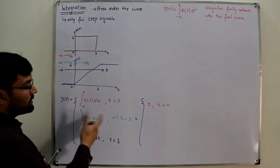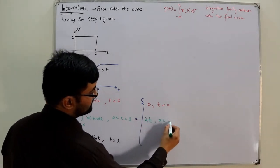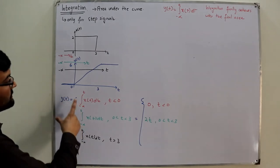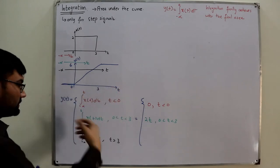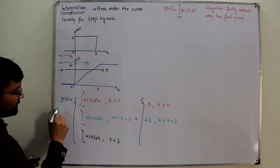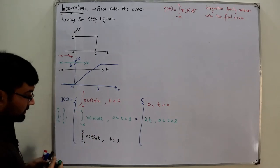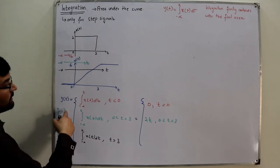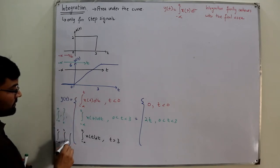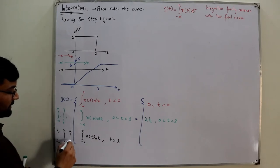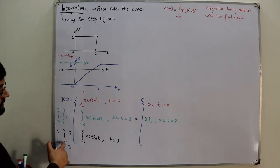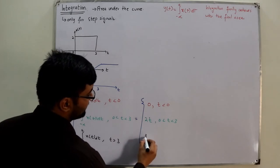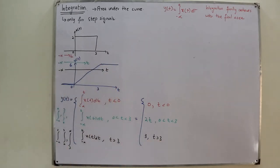For case 2 (0 ≤ T ≤ 3), x(t)=2, so the integral of 2 gives 2T evaluated from 0 to T. For case 3 (T > 3), we split the integral: from negative infinity to 0 it is zero, from 0 to 3 the signal is 2 giving a result of 6, and from 3 to infinity the signal is again zero. So when T is greater than 3, the answer stays at 6 — which matches the graphical result.